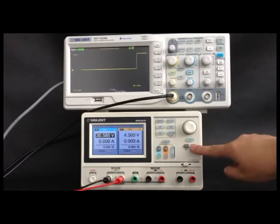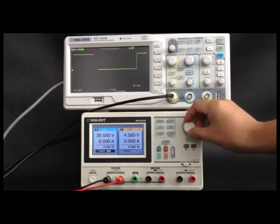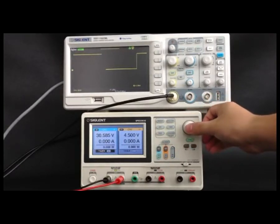Move cursor to timer menu by pressing the direction button. Rotate the multifunction knob to make the timer state on.